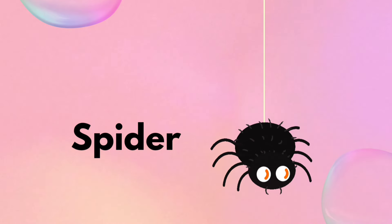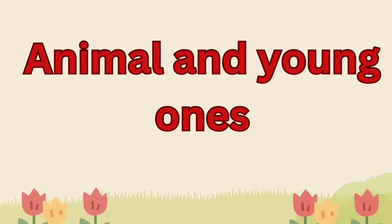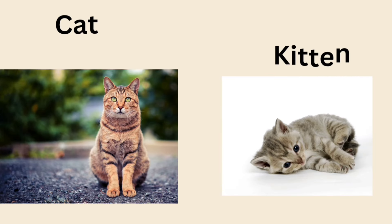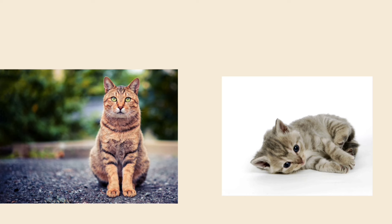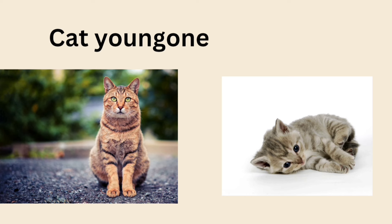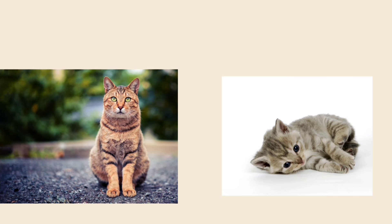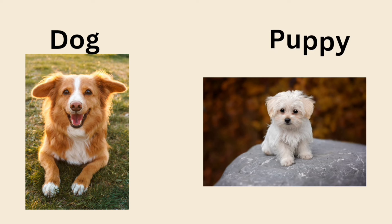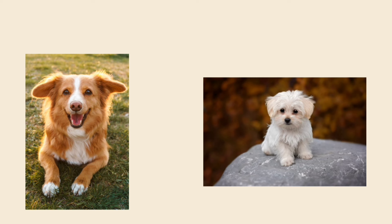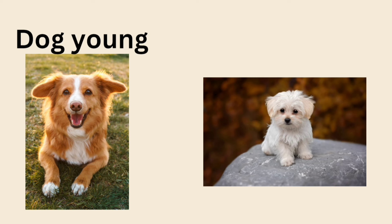Let us learn about animals and their young ones. Cat — young one is kitten. Dog — young one is puppy.